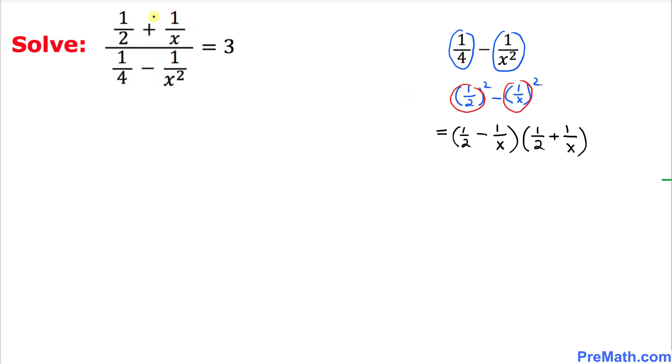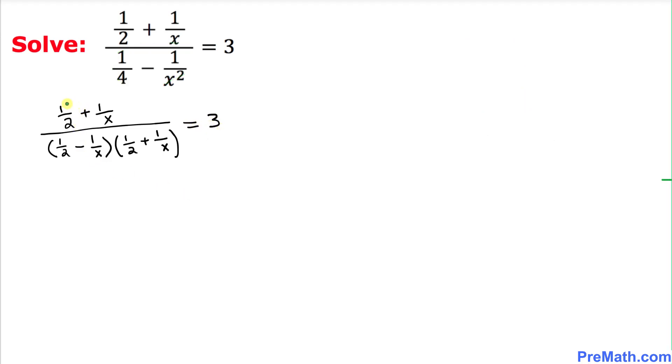Let's focus back on our original equation. We can write the top part same, divided by this denominator part. We're going to write its factors which are (1/2 - 1/x)(1/2 + 1/x). As we can see, this top part is same as this part so we can easily cancel that one out. We are ended up with 1 divided by (1/2 - 1/x) equals 3.